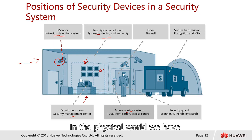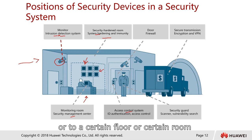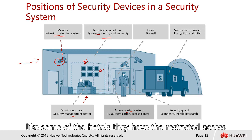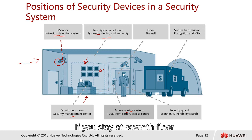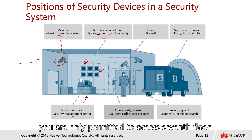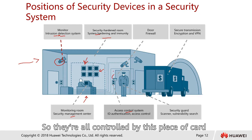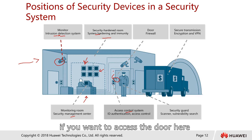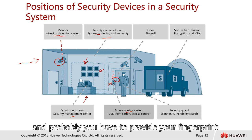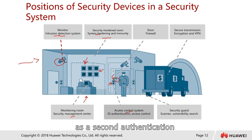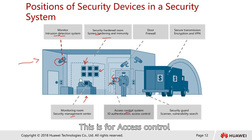We also have an access control system. In the physical world, if you want to access certain places, certain floors, or certain rooms — like in some hotels with restricted access — if you stay on the 7th floor you are only permitted to access the 7th floor, not the 8th floor. Access is controlled by a card. To open a door you swipe the card, and you may also need to provide a fingerprint as second authentication, or maybe an iris scan or face recognition.